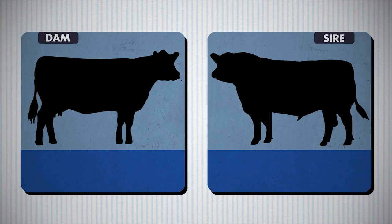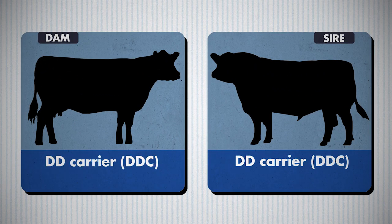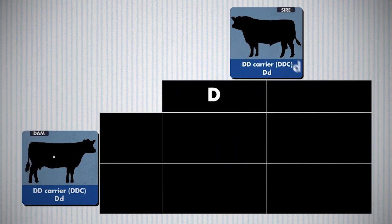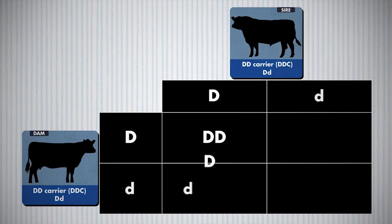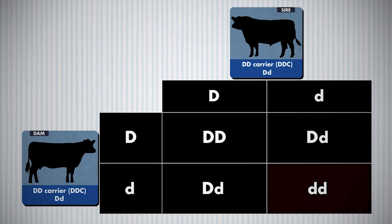Next, let's assume we're going to mate a DD carrier sire to a DD carrier cow. Both animals are designated with a capital D and a little d. From this example, there is a 25% probability that the progeny would be DD-free, 50% of the progeny would be heterozygous, or carriers of the condition, and 25% would be DD-affected — which is the undesirable outcome of this mating.